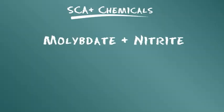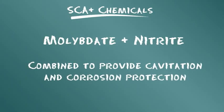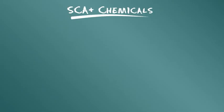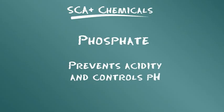Molybdate and nitrite are combined to provide cavitation erosion protection and inhibit corrosion. Phosphate functions as an alkaline buffer to prevent acidity and control pH.